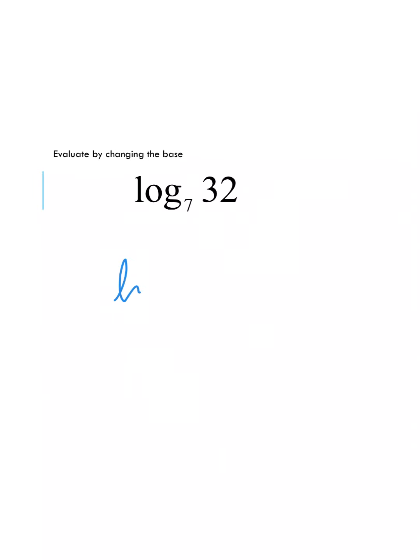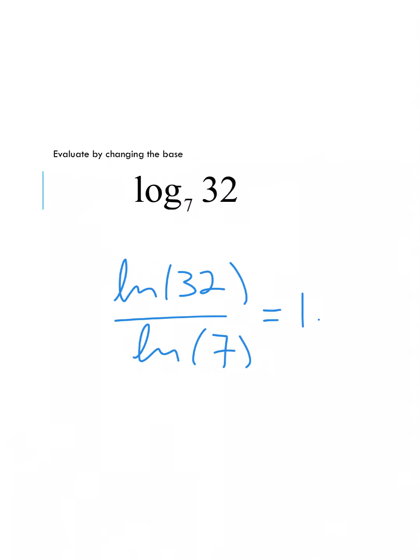Now evaluate log base 7 of 32 using your calculator and select the correct answer. Using natural log: natural log of 32 divided by the natural log of 7. Plugging that in correctly gives approximately 1.78.